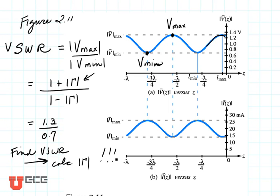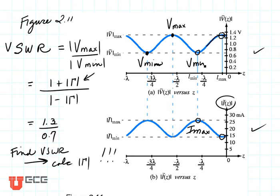Now let's take a look at these two plots — the one on the top and the one on the bottom. One is the plot of the envelope of the standing wave of the voltage, and the other is the envelope of the standing wave of the current. Notice that the peak of the voltage corresponds to the minimum of the current, and the minimum of the voltage corresponds to the maximum of the current. So Imax is in the same place as Vmin, and Imin is in the same place as Vmax.